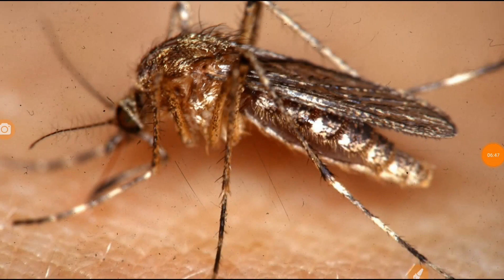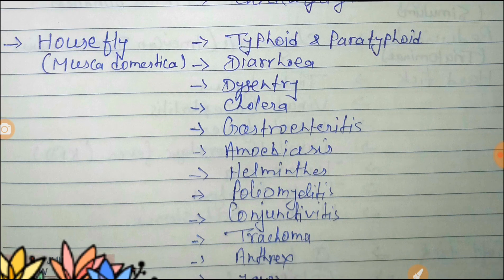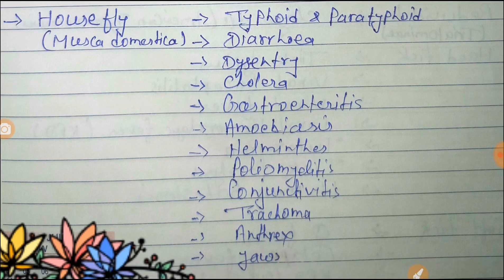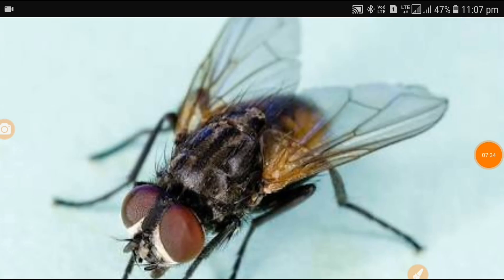Next is the housefly, also known as Musca domestica. It carries typhoid and paratyphoid, diarrhea, dysentery, cholera, gastroenteritis, amoebiasis, helminths, poliomyelitis, conjunctivitis, trachoma, anthrax, and yaws. That means all diseases causing dysentery or diarrhea-like conditions. This is the image of the housefly.